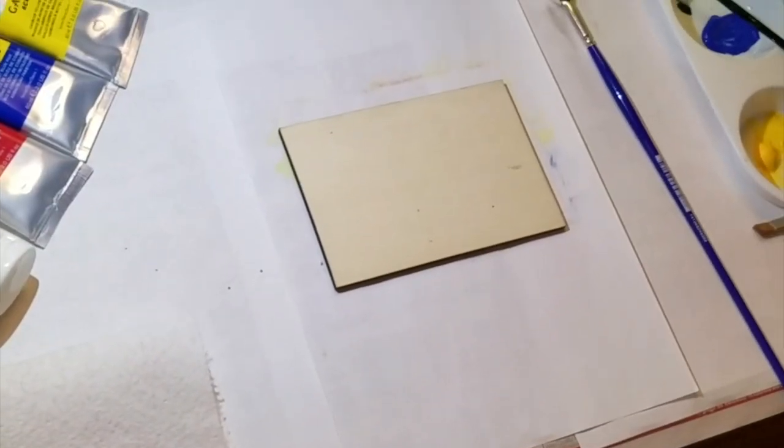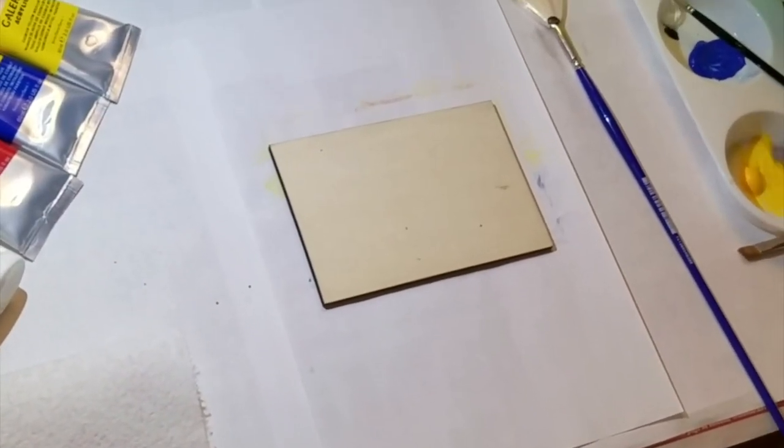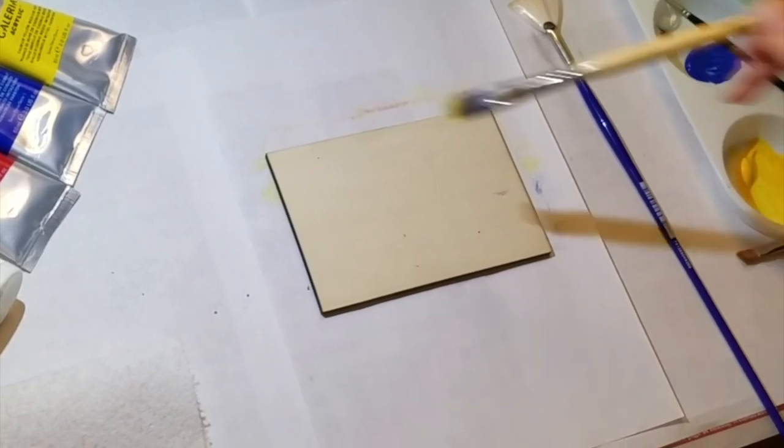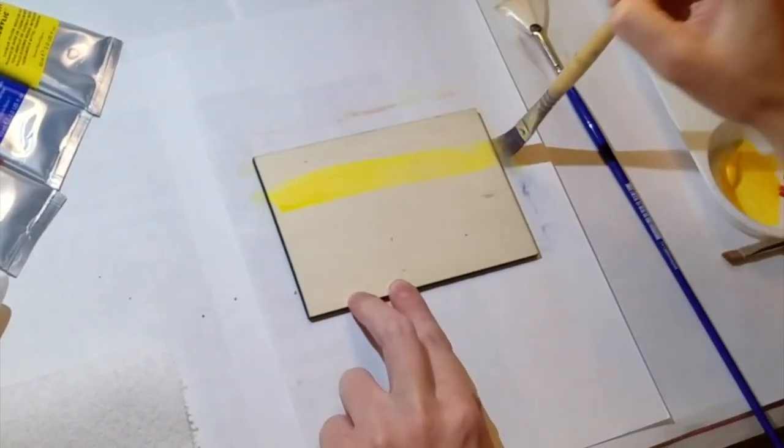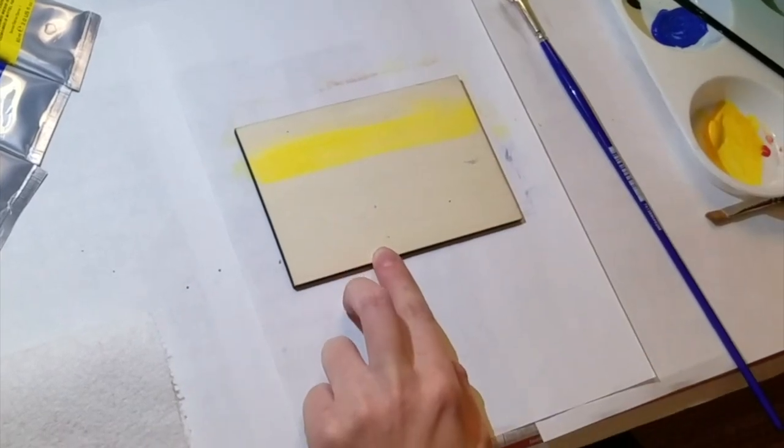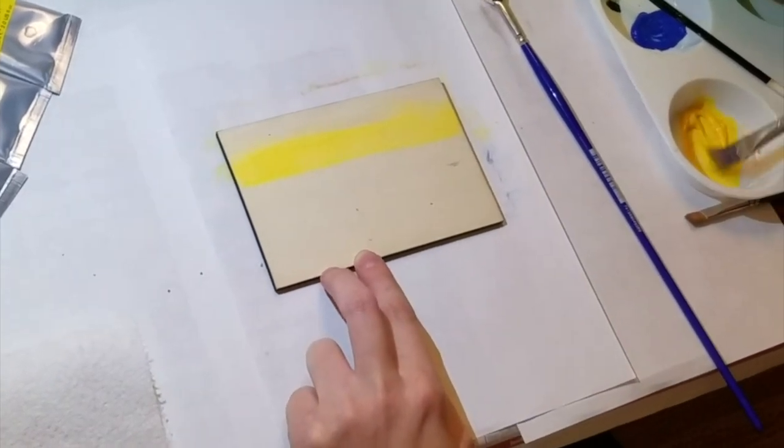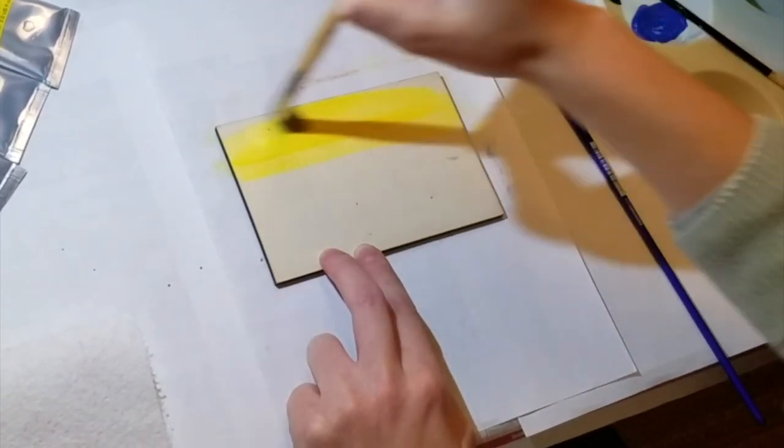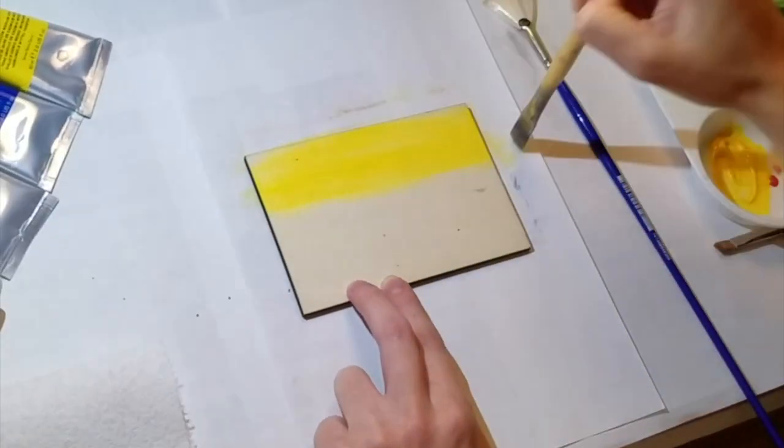First, I used a decent amount of water and a bunch of yellow to paint the whole dragon, except where I planned to paint it blue. And this I did fairly quickly, keeping in mind I want the yellow transparent enough, thus the water, to be able to see the wood grain underneath.